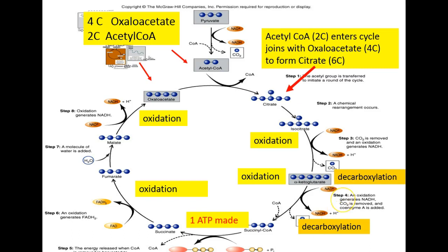This represents four decarboxylation steps per glucose molecule from the TCA. Adding these four decarboxylation steps to the two decarboxylation steps from each of the two pyruvates in the transition step gives us six carbons removed in total, which represent the six original carbons from the glucose molecule that started in glycolysis.